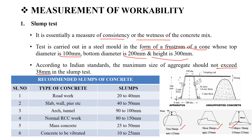The slump values important to note: road work is 20 to 40 mm, slab and wall is 40 to 50 mm, caisson and tunnel is 90 to 100 mm, normal RCC is 80 to 150 mm, mass concrete is 25 to 50 mm, and concrete to be vibrated is 10 to 25 mm.